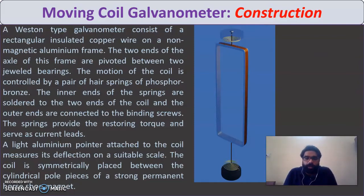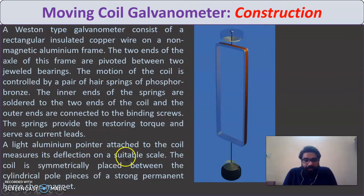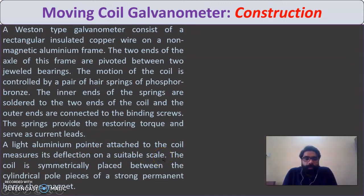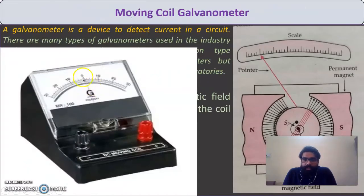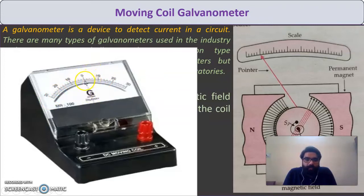The pointer deflects as the coil moves — to one side if current flows in one direction, and to the other side if current is reversed. A light aluminum pointer is attached to the coil to measure its deflection on a suitable scale. The pointer can deflect to either side of zero.